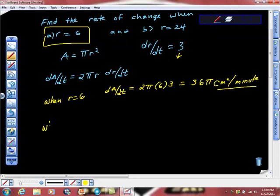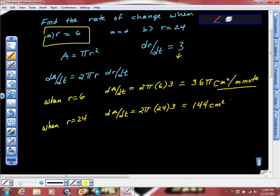And then we're just going to do the same thing with part B. And it says what happens when the radius is 24. And you can see that it works out exactly by the same type of mathematics. It's that we get 2 pi times the radius, which now is 24, times 3, which is our dr/dt. And that is equal to 144 centimeters squared per minute.